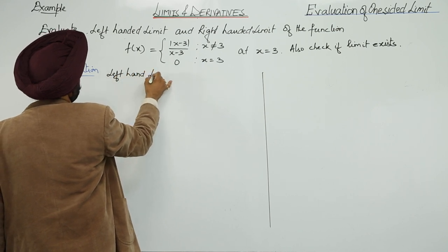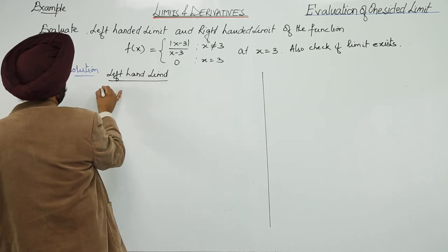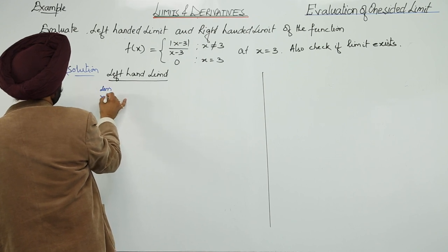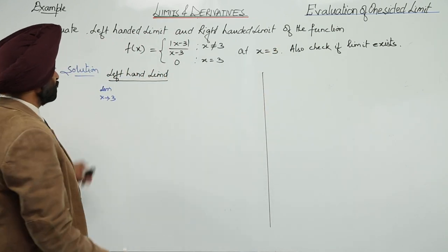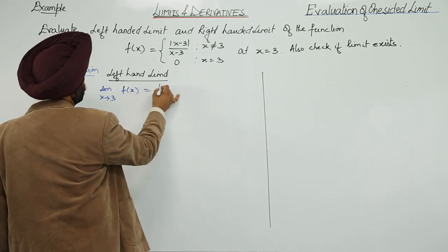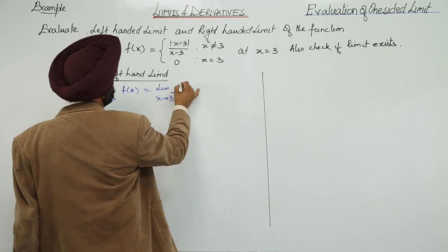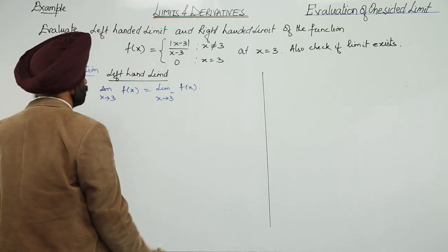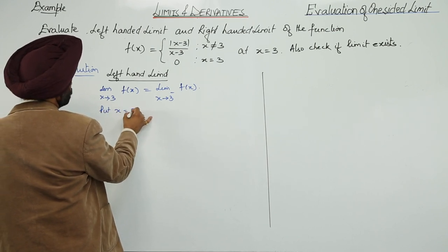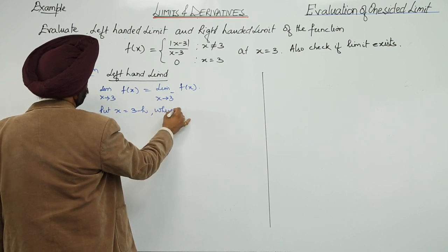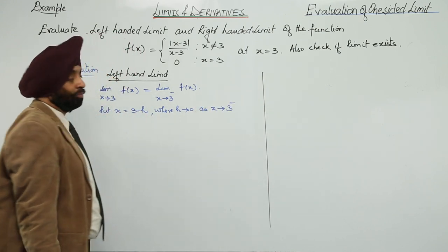For the left-hand limit: limit as x approaches 3 from the left of f(x). We put x equal to 3 minus h, where h approaches 0 as x approaches 3 from the left.